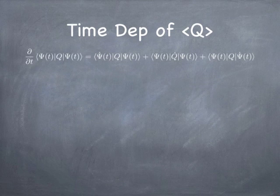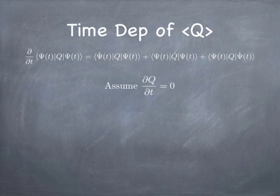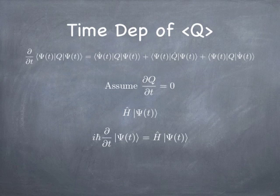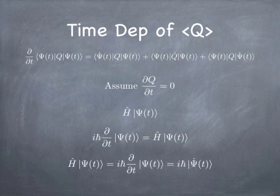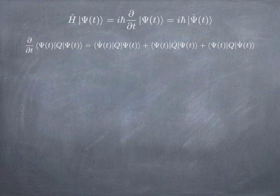If you look at that inner product, you'll notice it has three pieces: it's got the bra, it's got the operator, and it's got the ket. In principle, all three of those things can depend on time. We're going to focus on cases where the operator doesn't explicitly depend on time — there's no t in the operator itself. Also remember that when the Hamiltonian hits the wave function, that produces something proportional to the time rate of change. So you can solve for psi-dot, and that's minus i times the Hamiltonian divided by h-bar.